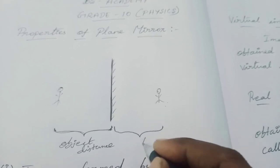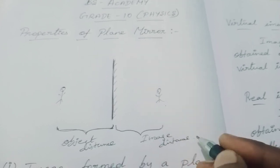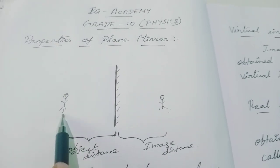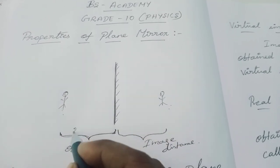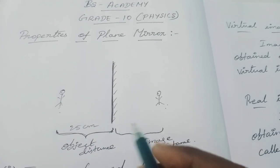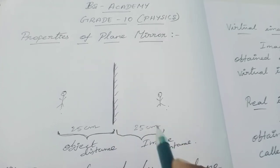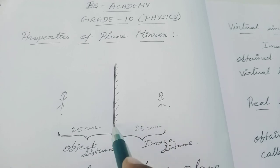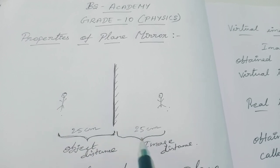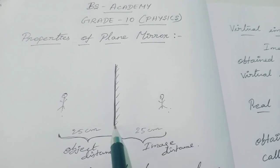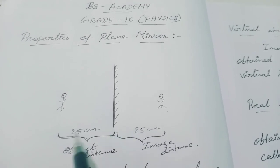For example, if this person is standing 25 centimeters in front of the mirror, then the image will also be formed at 25 centimeters distance from the mirror, but at the back side of the mirror. This means the object distance is always equal to the image distance in the case of a plane mirror.